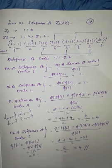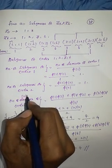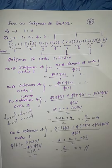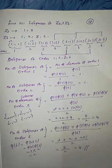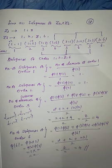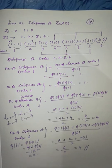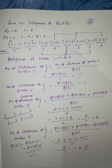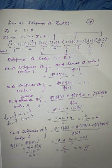In an exam, they might ask the number of subgroups of order 3 in Z3 cross Z6 — the answer is 4. They might also ask for subgroups of order 1 — the answer is 1. I hope you enjoyed this video. Please share and subscribe, and share with your friends. In the next video, I will try to solve problems on finding the order of subgroups that appeared in previous years on CSIR NET or SLET exams.